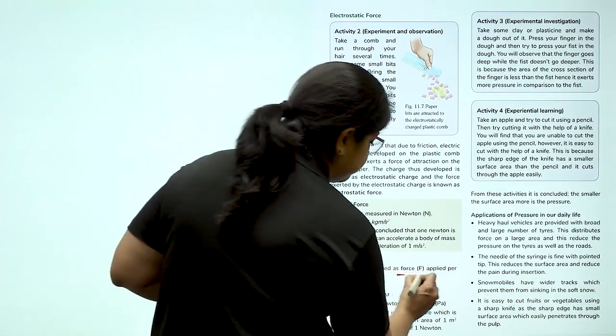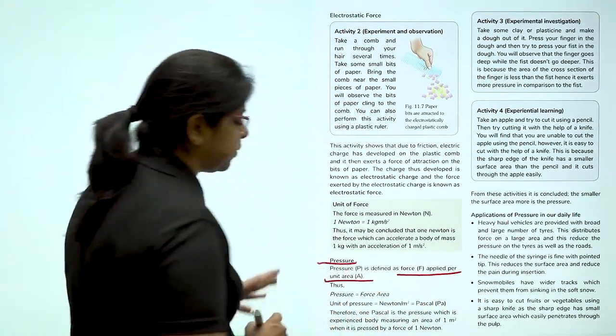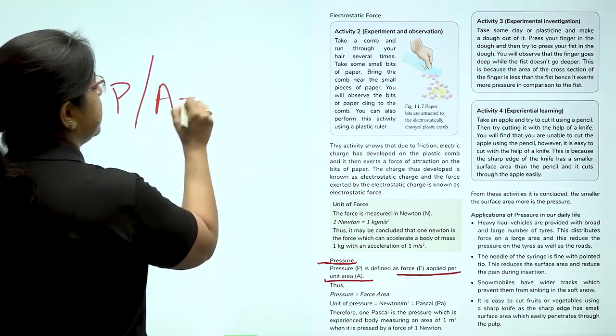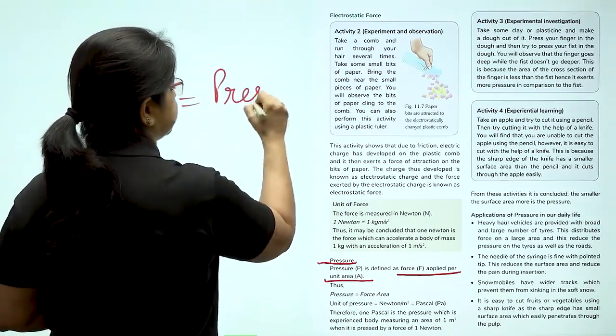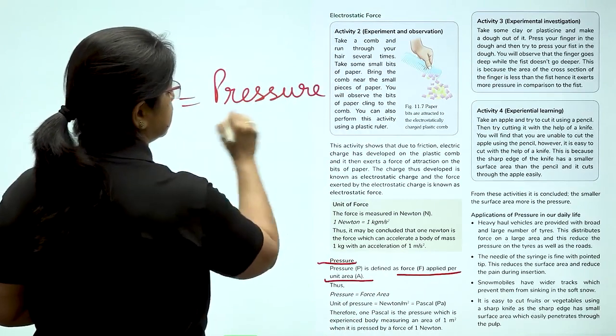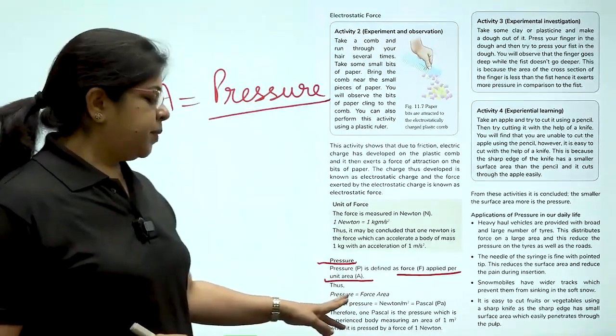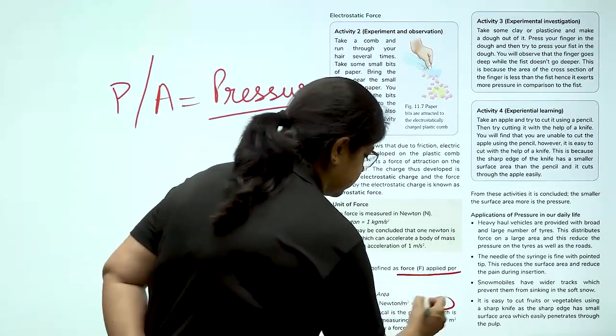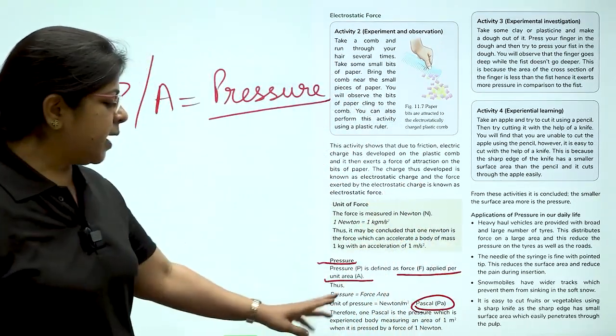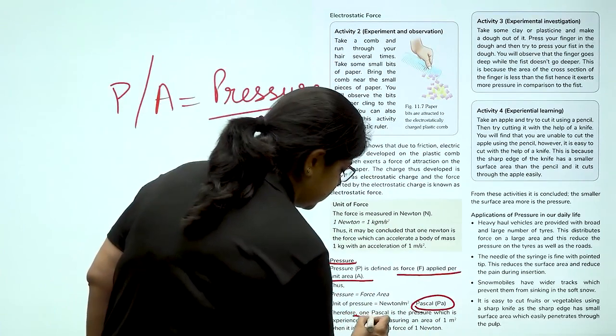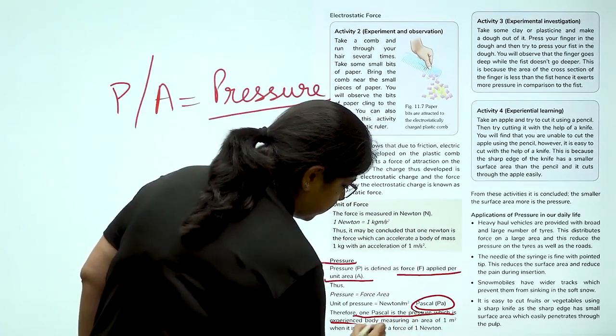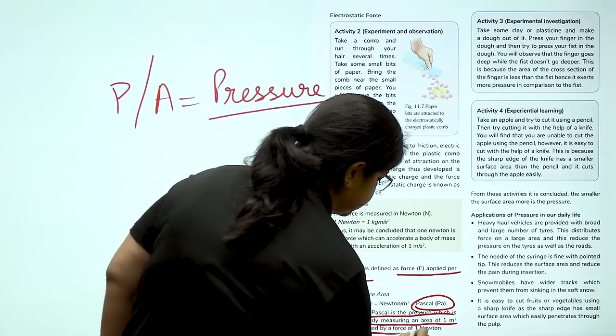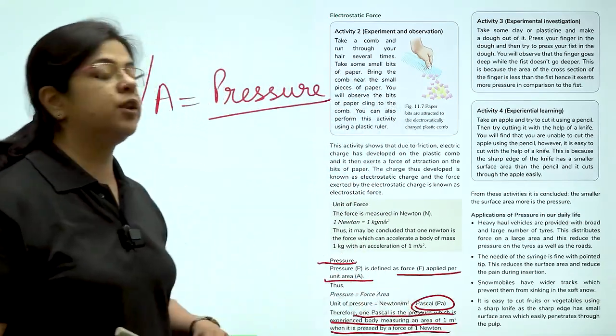The force that is applied per unit area. Force applied per unit area is pressure. And pressure is equal to force into area. The unit is pascal. Therefore, 1 pascal is the pressure experienced by a body measuring an area of 1 meter square when it is pressed by a force of 1 newton.